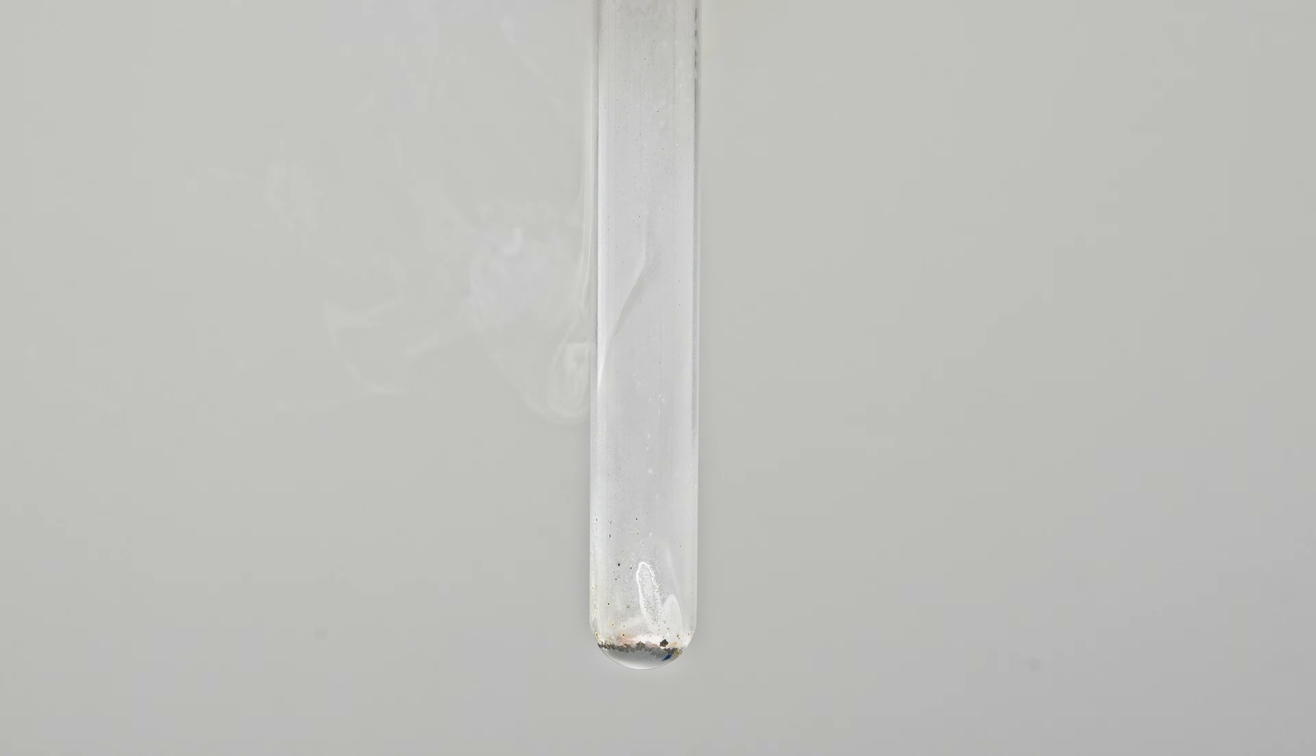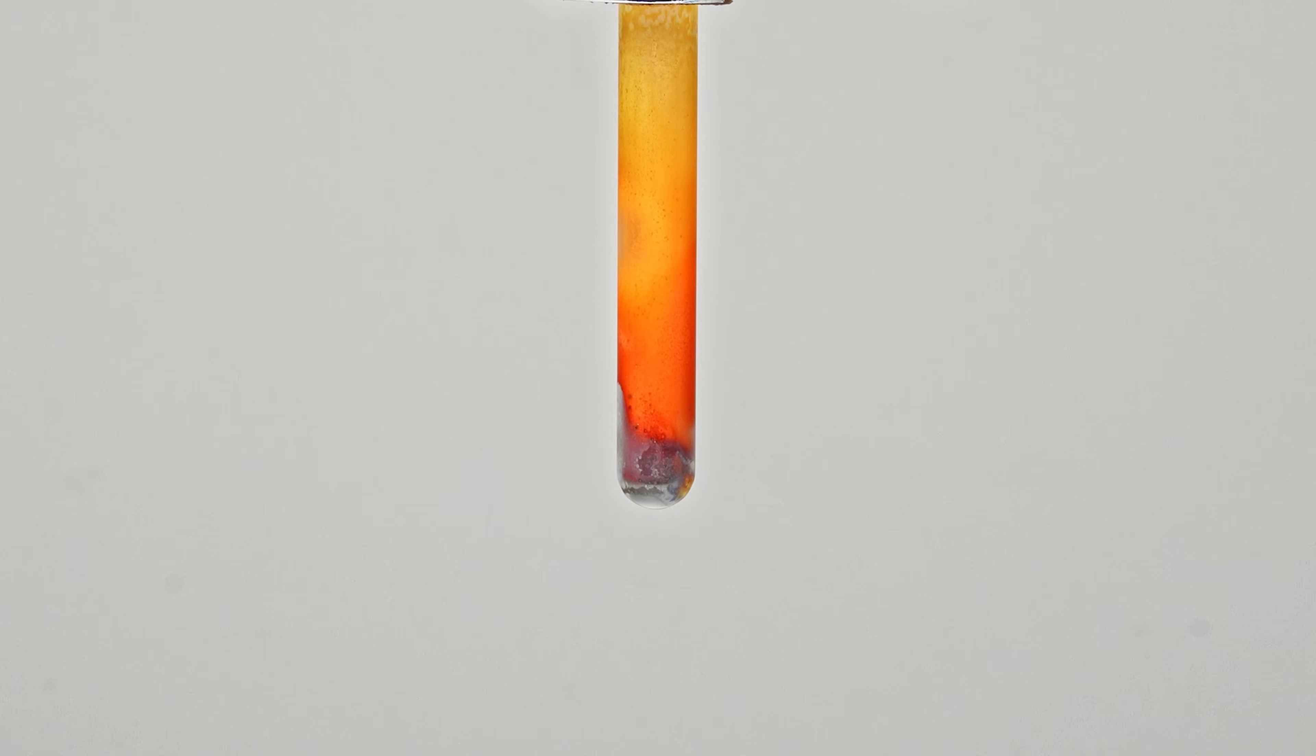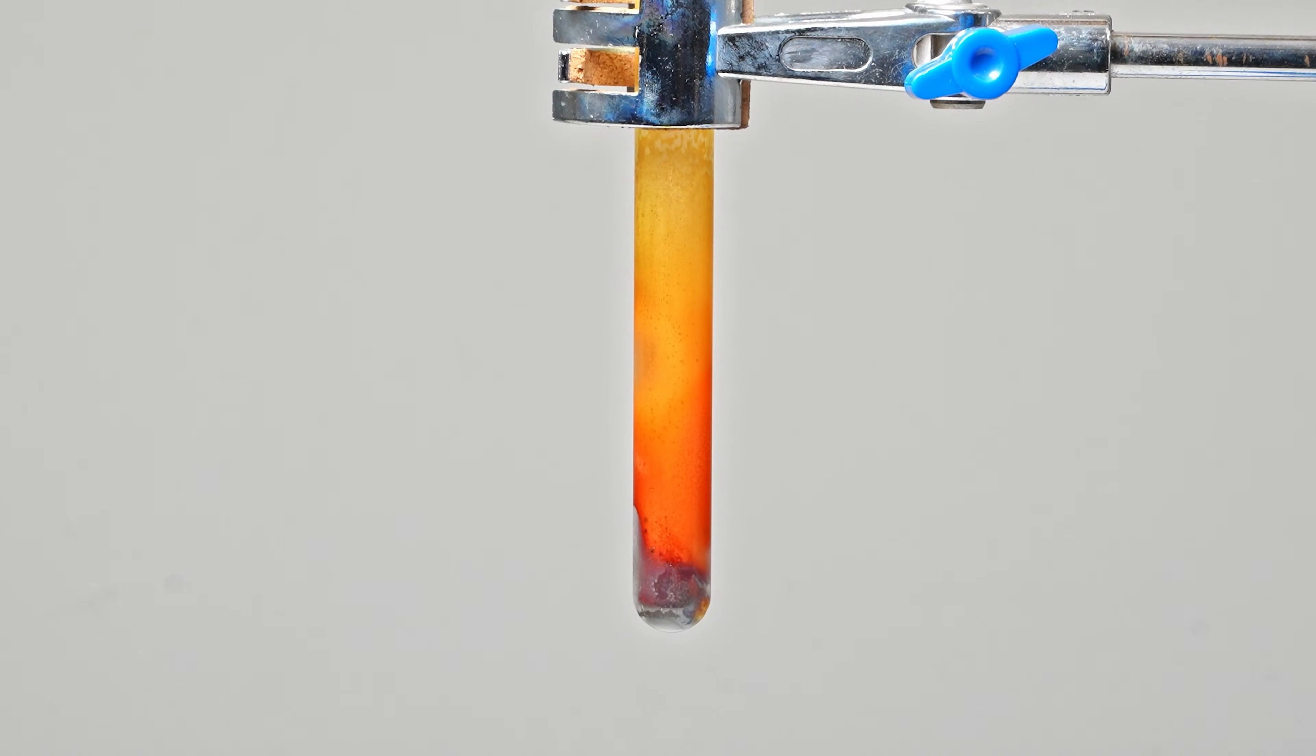Yes, almost immediately we noticed yellow fumes and an orange coating on the wall of a test tube. This is very similar to the formation of vanadium pentafluoride, a liquid at room temperature that instantly forms vanadium pentoxide upon contact with moisture in the air. Vanadium pentoxide is orange, just like the layer we see on the side of the test tube.